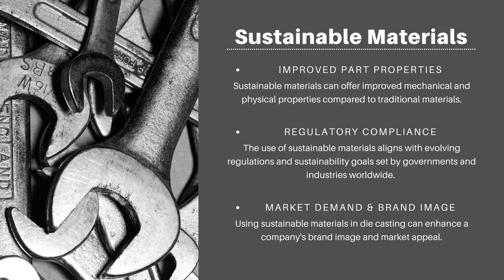Why should industries use sustainable materials to aid the die casting process? The use of sustainable materials in the die casting process can bring several benefits, both environmentally and economically. Firstly, improved part properties. Sustainable materials can offer improved mechanical and physical properties compared to traditional materials. For example, aluminium alloys offer high strength, corrosion resistance and excellent thermal conductivity, allowing for high quality parts that meet demanding performance requirements.